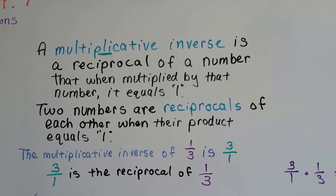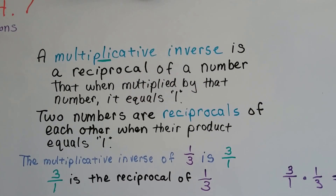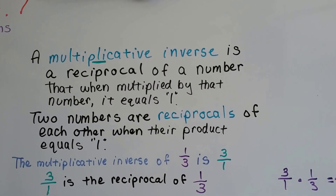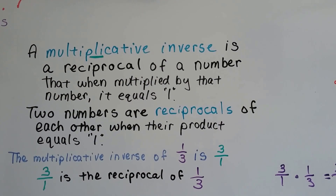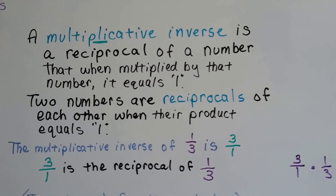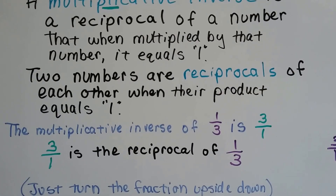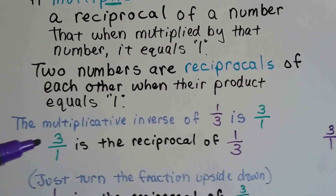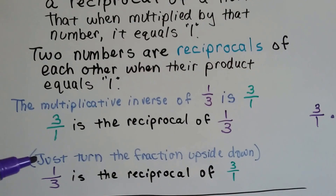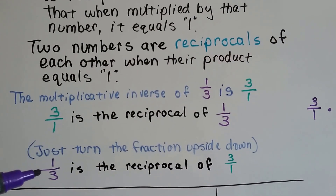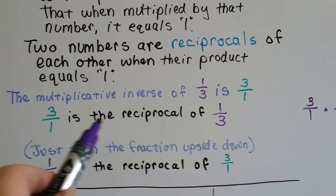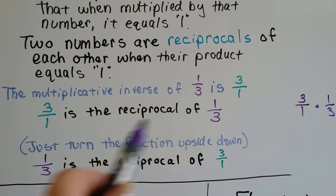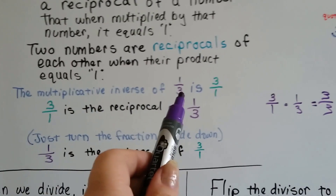A multiplicative inverse is a reciprocal of a number that, when multiplied by that number, equals 1. Two numbers are reciprocals of each other when their product equals 1. The multiplicative inverse of 1 third is 3 over 1. 3 over 1 is the reciprocal of 1 third — just turn the fraction upside down. 1 third is the reciprocal of 3 over 1, and 3 over 1 is the reciprocal of 1 third. They're just flipped upside down. That's the multiplicative inverse.